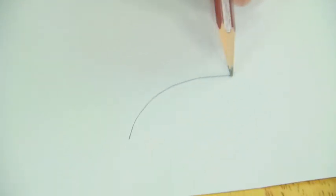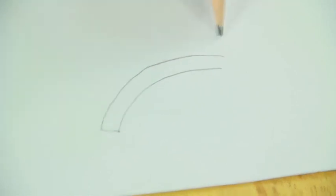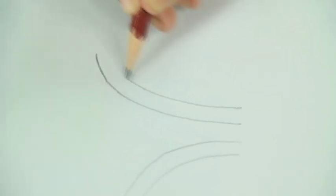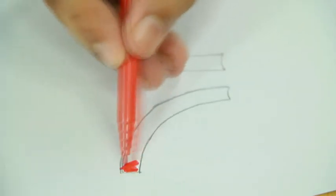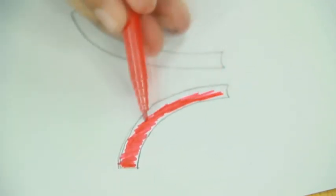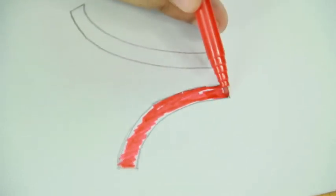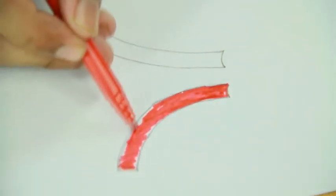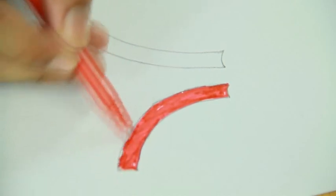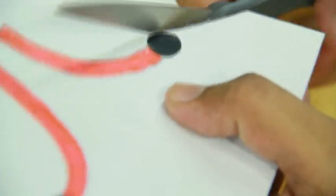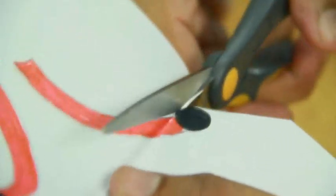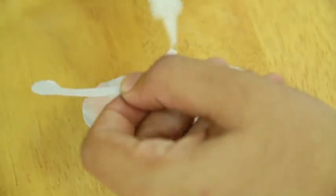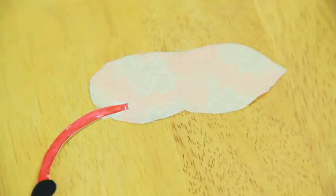Draw the antennas on the butterfly on an ivory sheet. Color it and cut it. Now take one body cut out and paste the antennas on the other side.